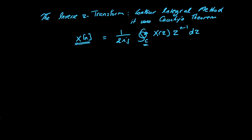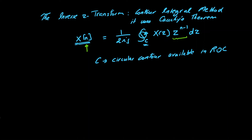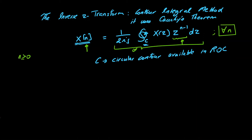Here, C is a circular contour located within the region of convergence. An important observation is that the variable n appears in the exponent of z, so this contour integration is valid for all values of n. However, you must select whether n is greater than or equal to 0, or less than 0, to evaluate the integral.